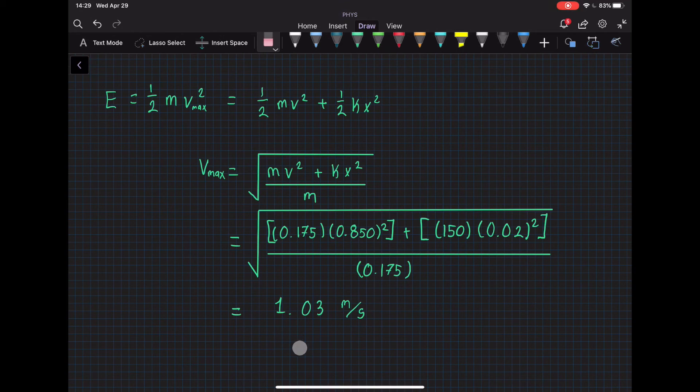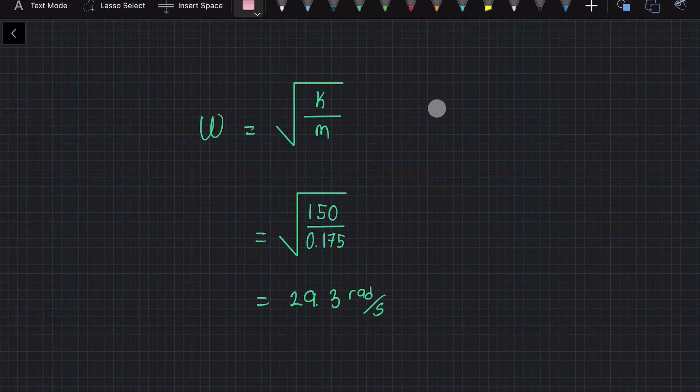For the last part we need to find the angular frequency of the oscillations. We can use this formula. We already have these two variables, so we plug in numbers and we get 29.3 radians per second.